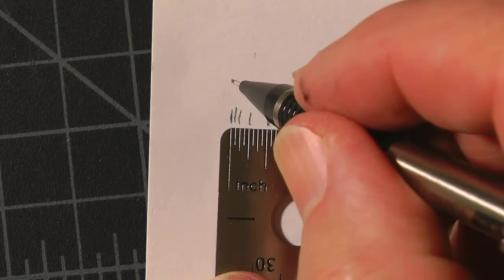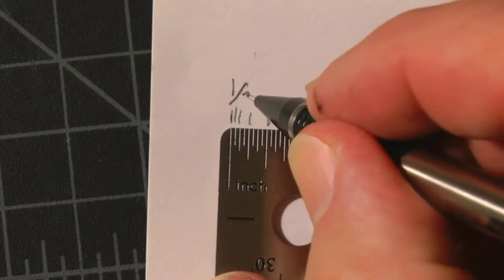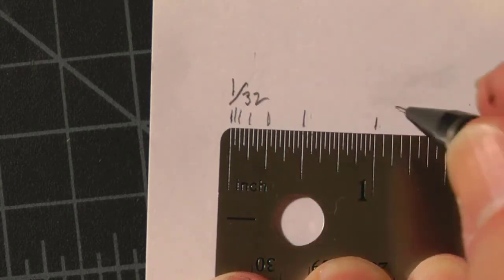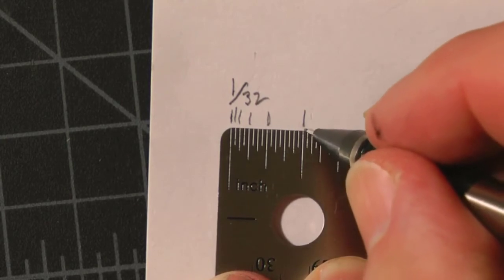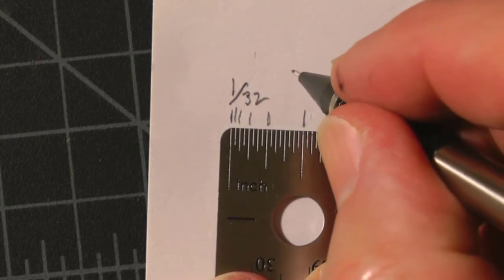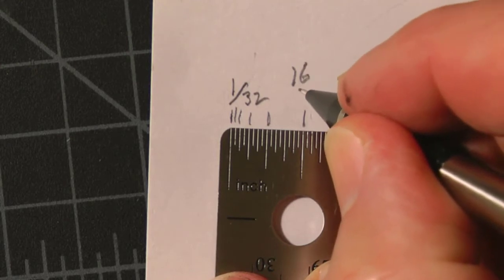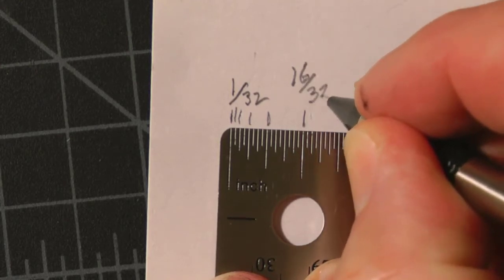So these tiny little guys here are thirty-seconds. So this is a one thirty-second, one thirty-two. And in here, the half inch one would be sixteen thirty-seconds.